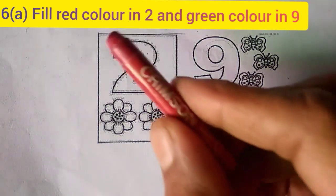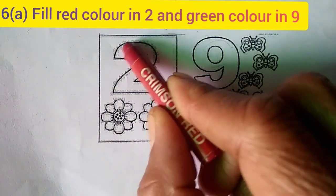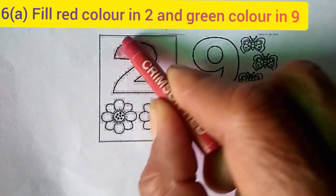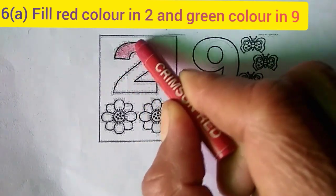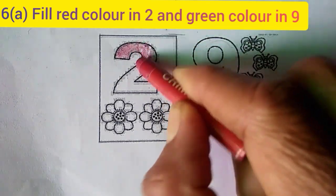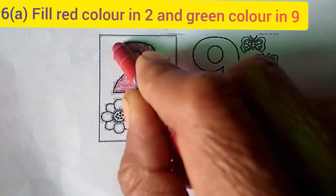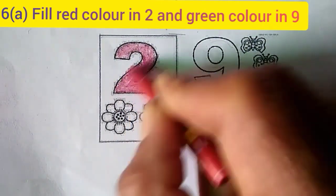Now we fill the color in number 2. Let us start. We can color with wax color. Color these shapes very carefully. Like this. We completed the color in 2.